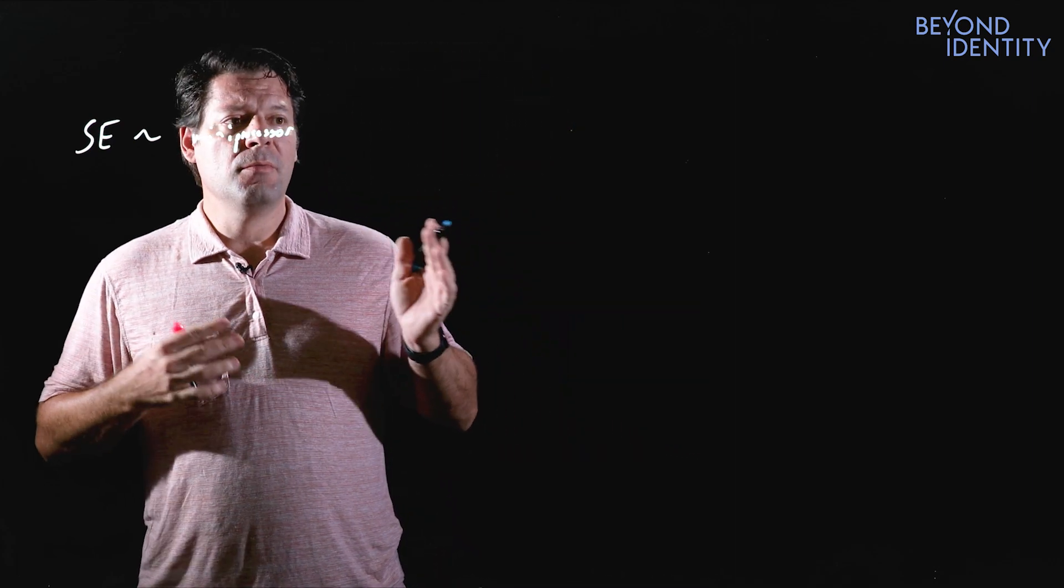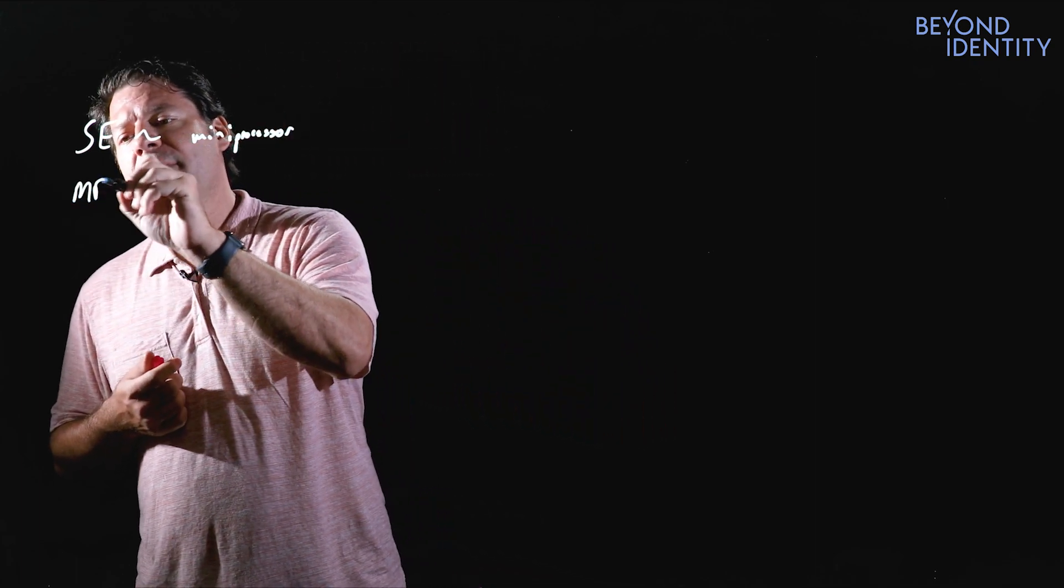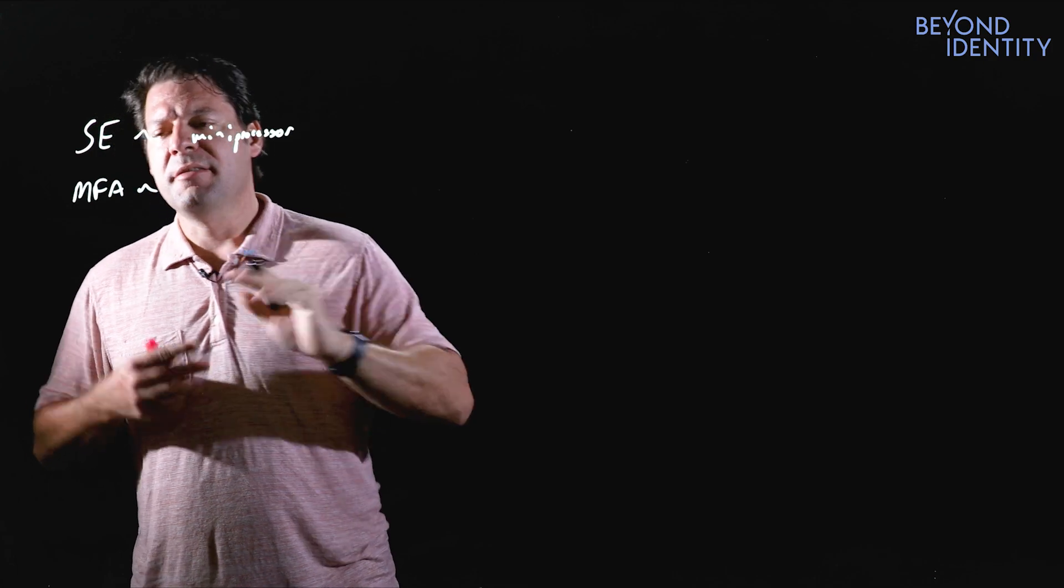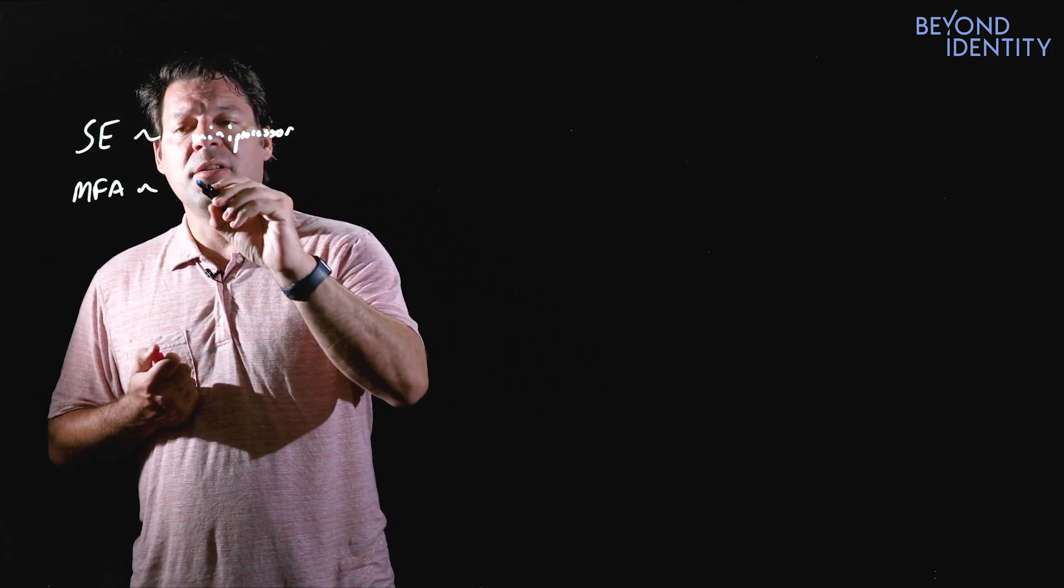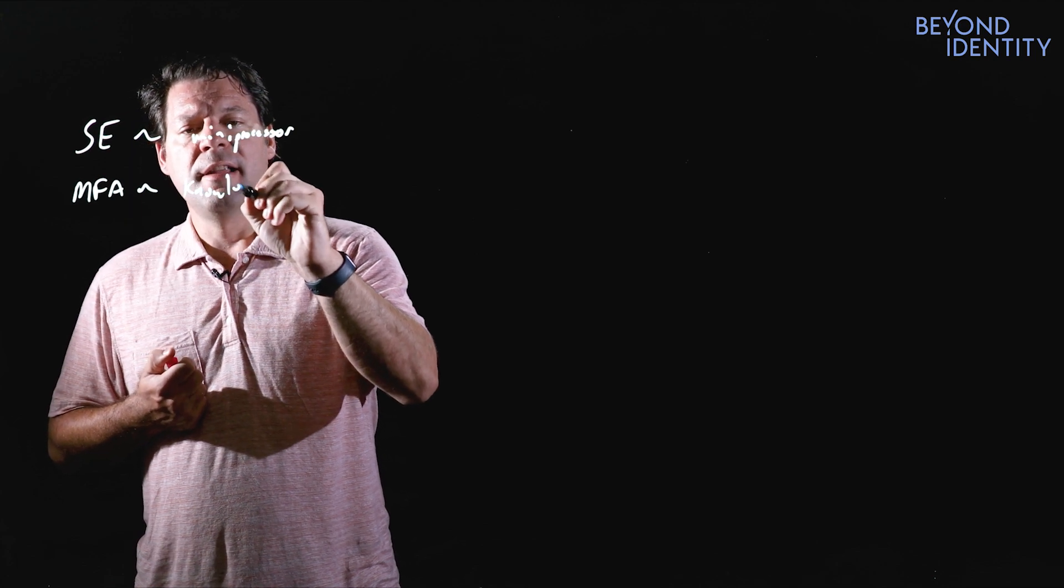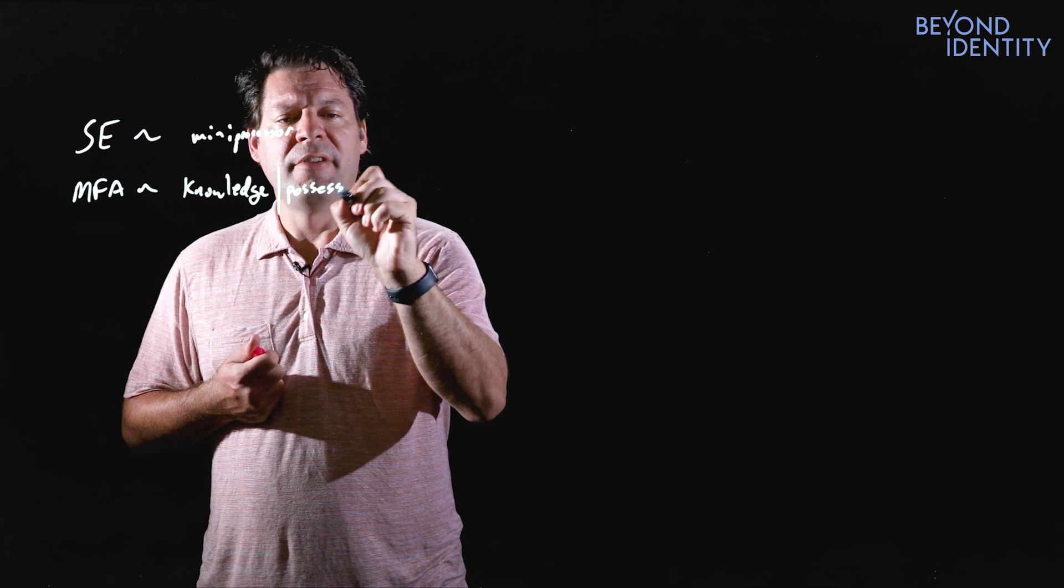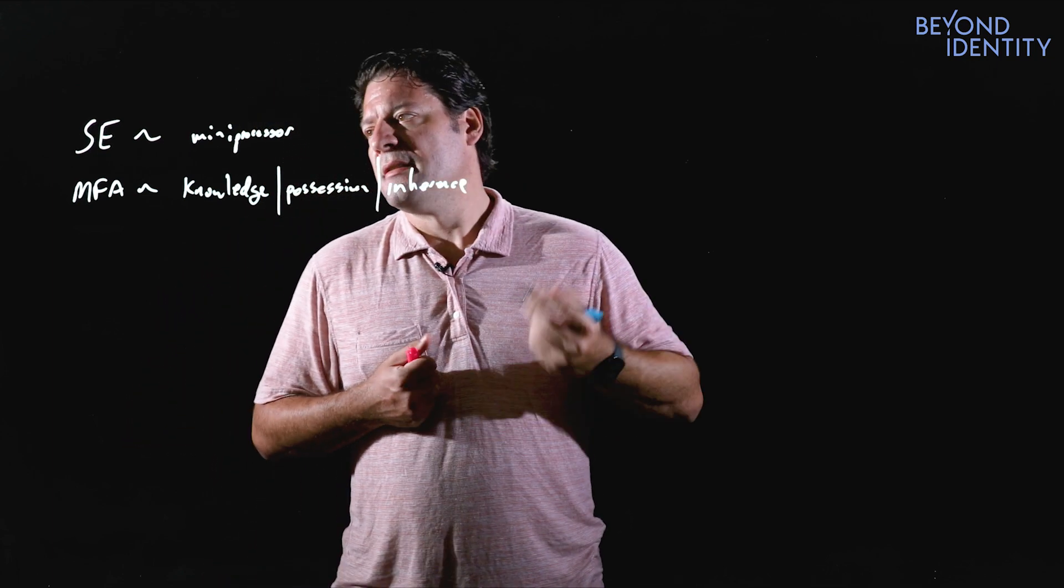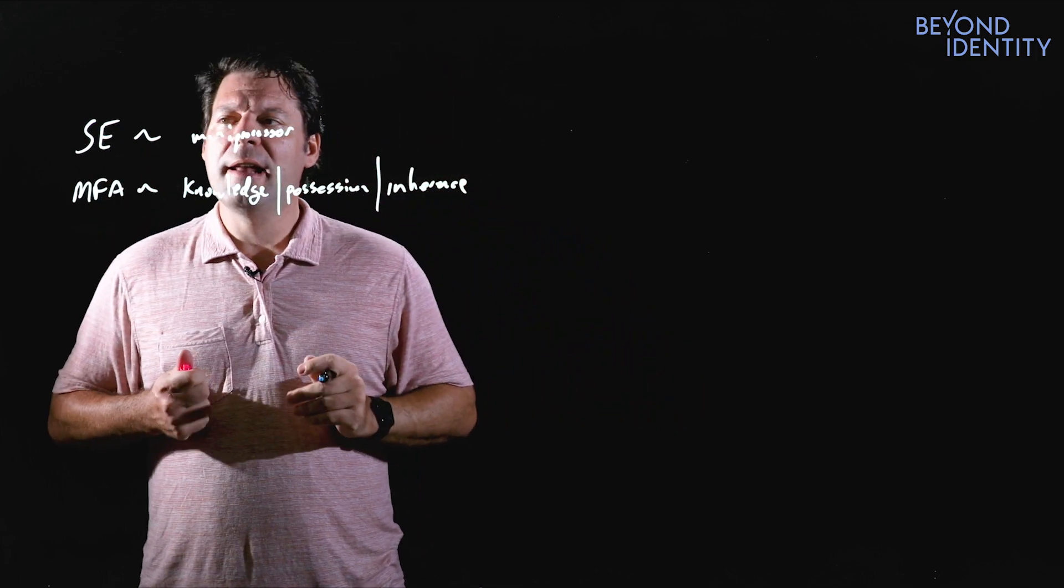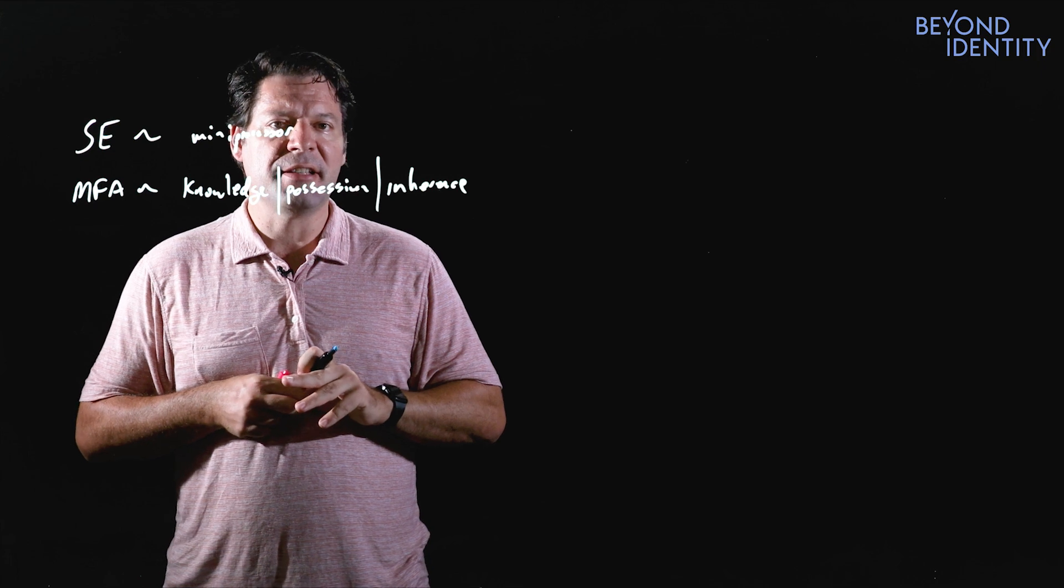So prior, we talked about multi-factor is really kind of having three dimensions, and there's a lot of different data points on those dimensions that you can take, but ultimately it boils down to knowledge factors, possession factors, and inherence factors. So I want to show how a secure enclave can actually map into each of these dimensions.